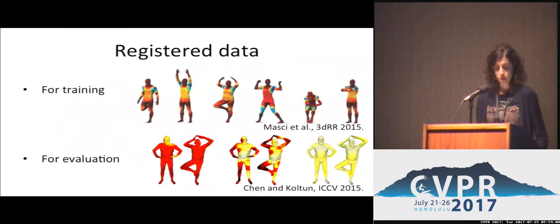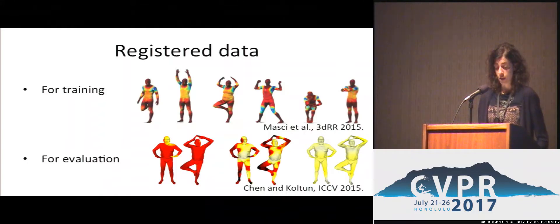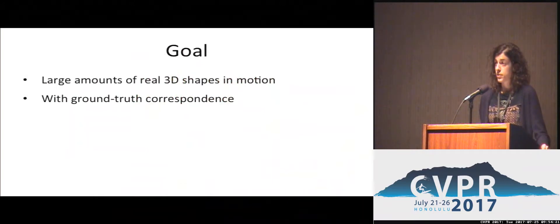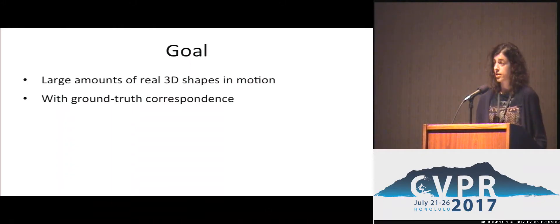Once we have data in correspondence, we can use it for learning statistics, training deep learning methods, or to develop and evaluate registration techniques. In general, having registered real data is better than just synthetic data, because it can better capture the non-rigid articulated motion of the body. So we identified these requirements for many computer vision applications today: large amounts of real 3D shape captured in motion, precisely registered with ground truth correspondence.